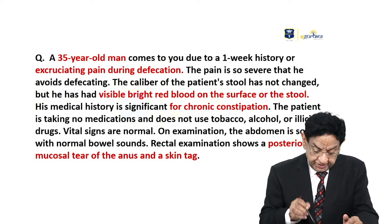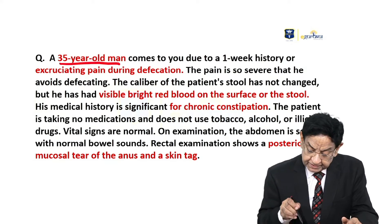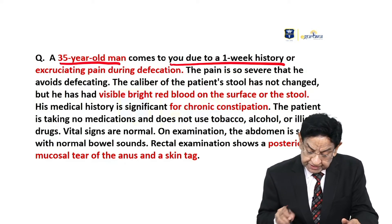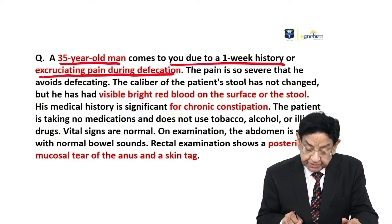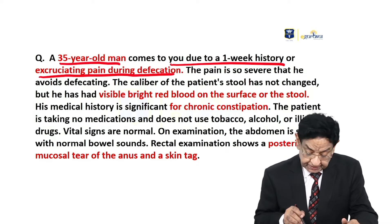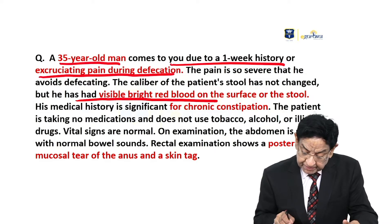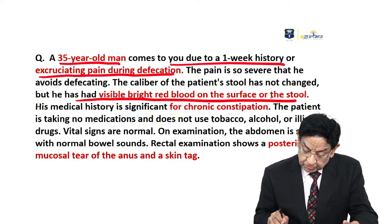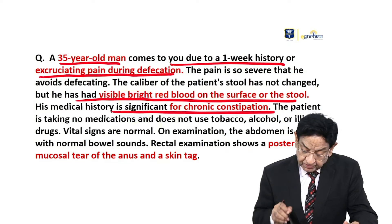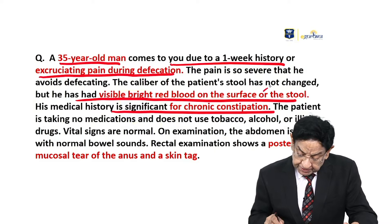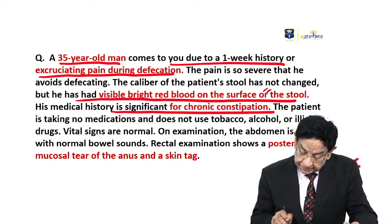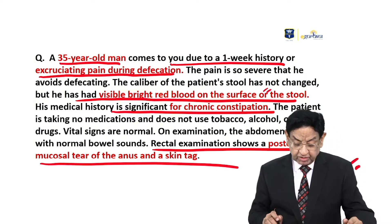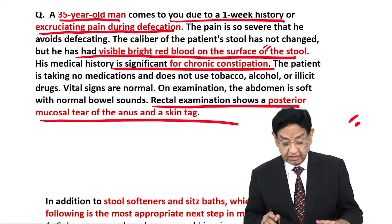We have a 35-year-old man who comes in with a one-week history of excruciating pain during defecation. Stool caliber has not changed, but he had visible bright red blood on the surface of the stool. His medical history is consistent with chronic constipation, and rectal examination shows a posterior mucosal tear of the anus and a skin tag.